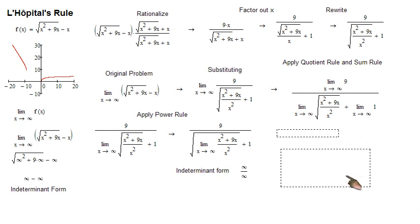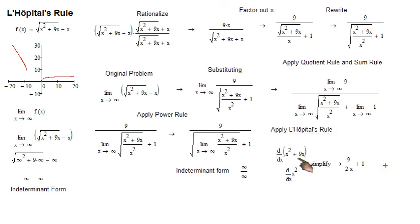But we can apply L'Hopital's rule to this part right here. We take the derivative of x squared plus 9x, and the derivative of x squared, simplify, combine like terms, we get 9 over 2x plus 1.